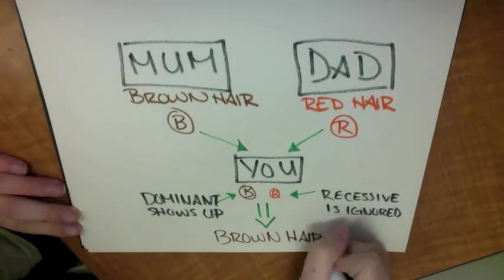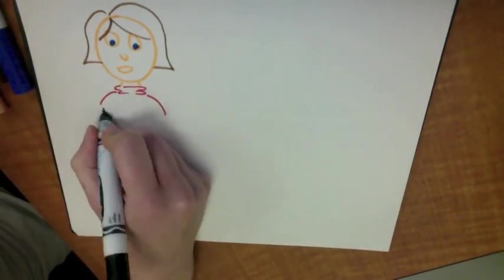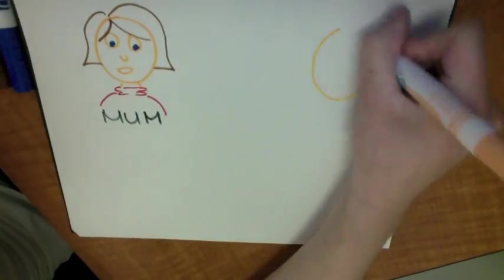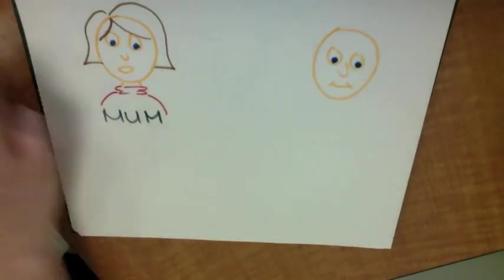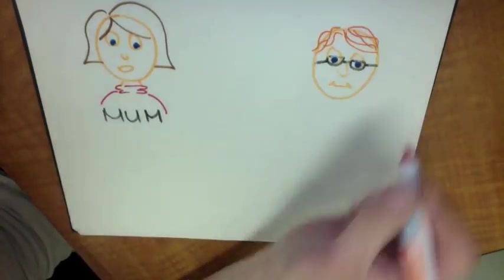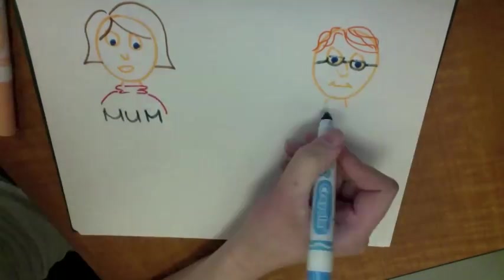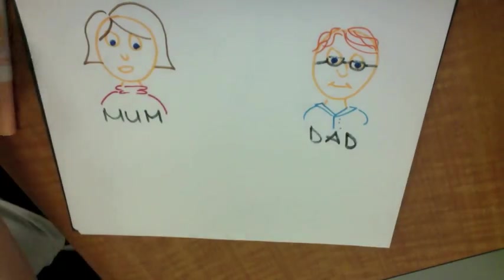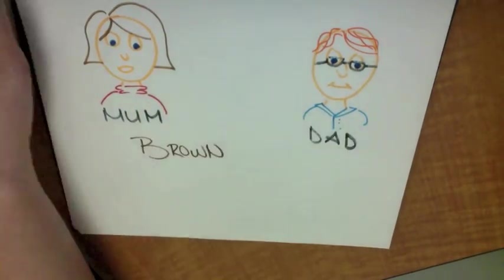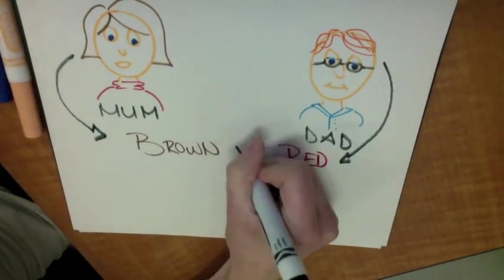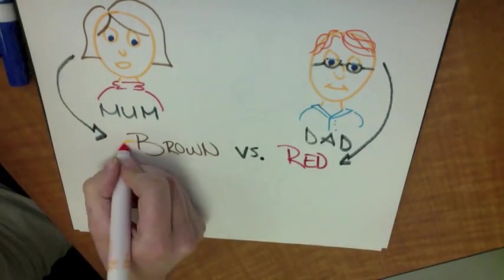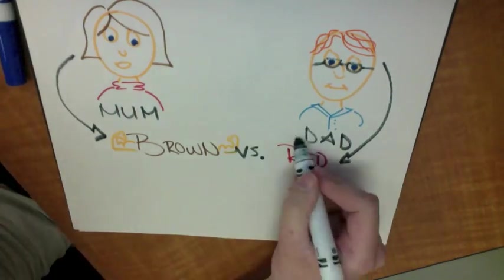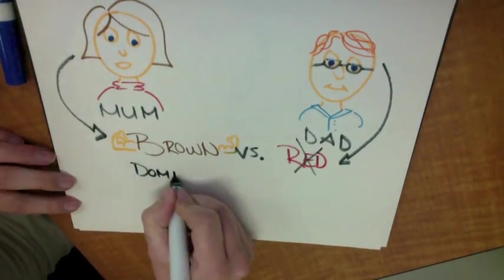Brown hair is dominant, so your hair is brown. Your mom has brown hair — she gives you the brown allele. Your dad has red hair — he gives you the red allele. Since brown is dominant, it influences the color of your hair, and you are now a brunette. The red allele sits hidden in your genes.